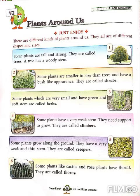Some plants are smaller in size than trees. Some plants are small and they have a bush-like appearance. They are called shrubs.